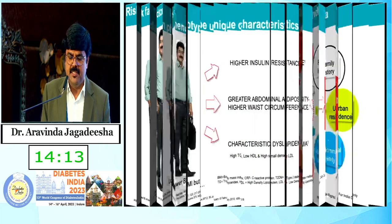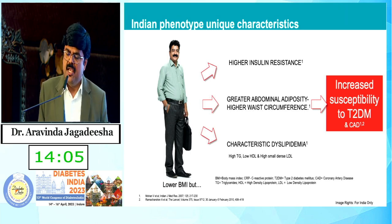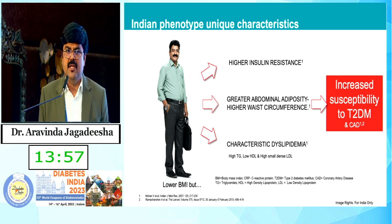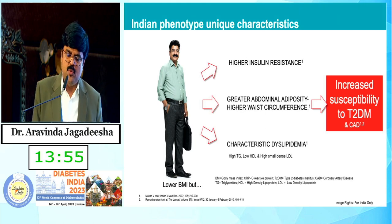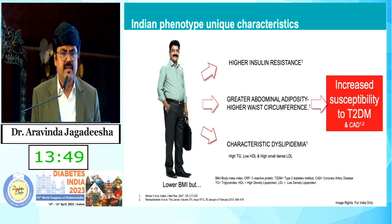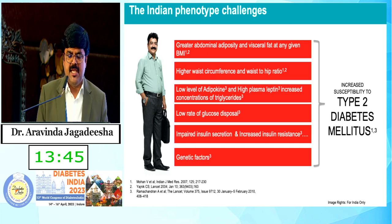We know that the Indian phenotype has unique characteristic features like higher insulin resistance, greater abdominal adiposity, higher waist circumference, characteristic dyslipidemia — that is high triglycerides, low HDL, and high small dense LDL — all of which lead to increased susceptibility to type 2 diabetes and CAD.